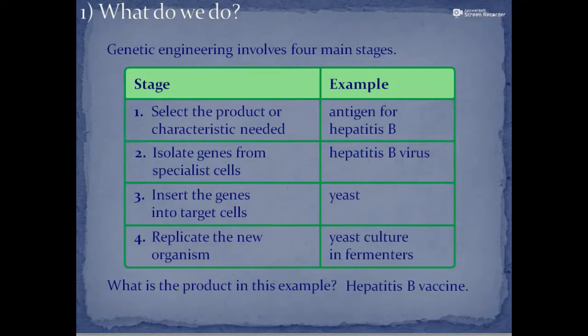In genetic engineering, you select your product or characteristic needed, for example, antigen for hepatitis B. Then you isolate the genes from specialized cells, insert the genes into target cells, and replicate it within a new organism to take the product.